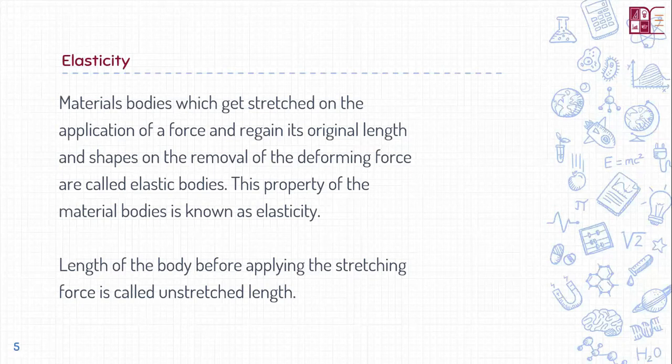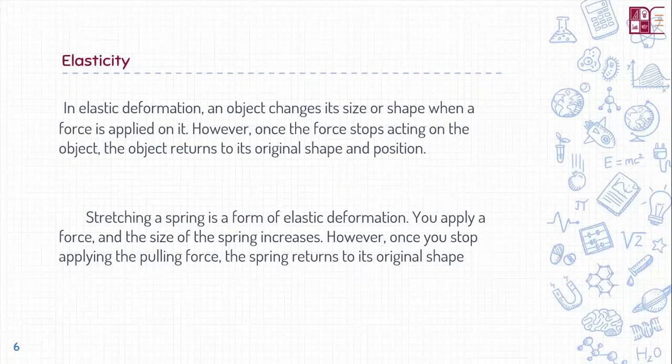The length of the body before applying the stretching force is called the unstretched length. In elastic deformation, an object changes its size or shape when a force is applied on it; however, once the force stops acting on the object, the object returns to its original shape and position.